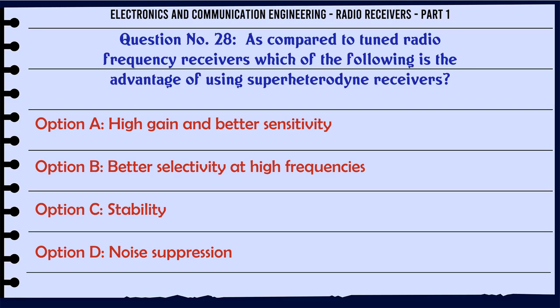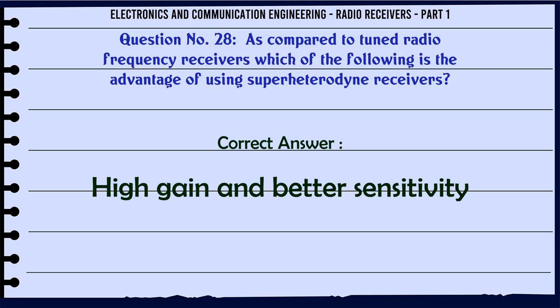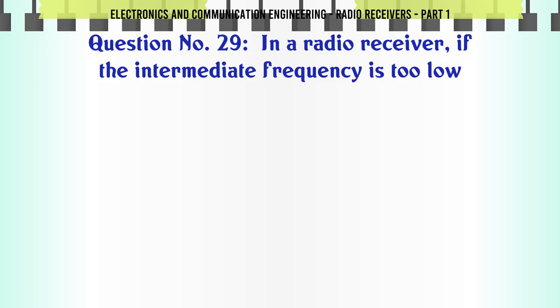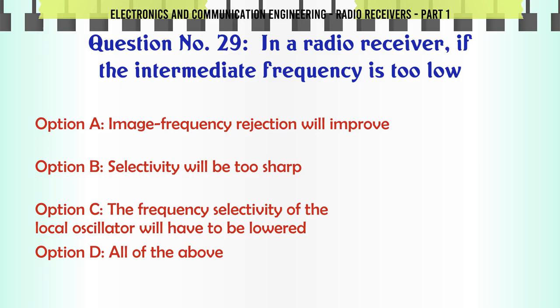As compared to tuned radio frequency receivers, which of the following is the advantage of using superheterodyne receivers? A. High gain and better sensitivity. B. Better selectivity at high frequencies. C. Stability. D. Noise suppression. The correct answer is high gain and better sensitivity.